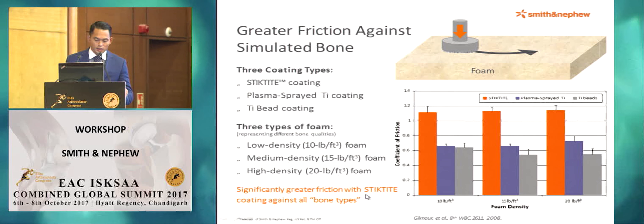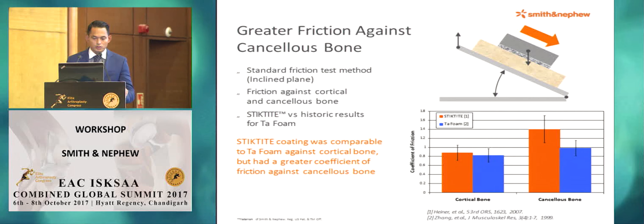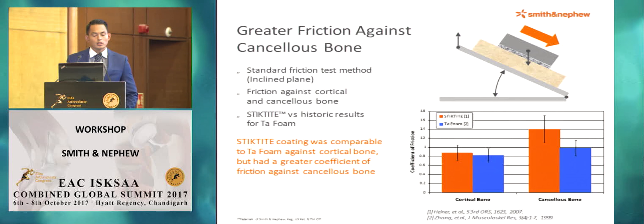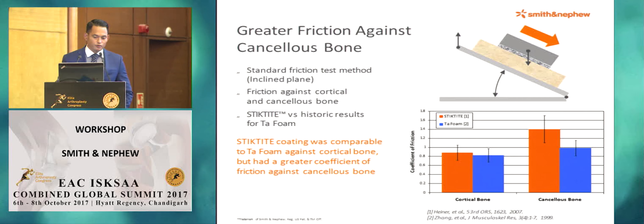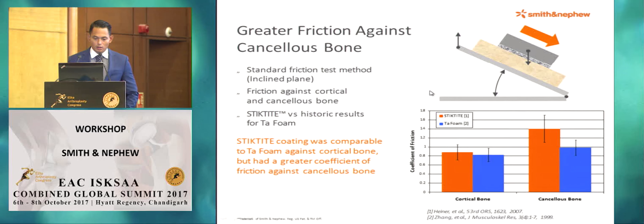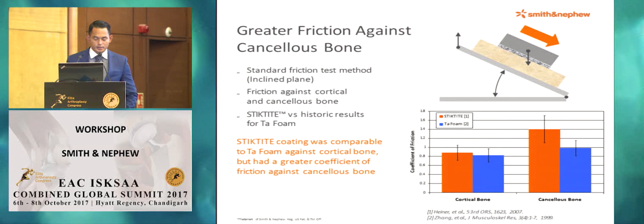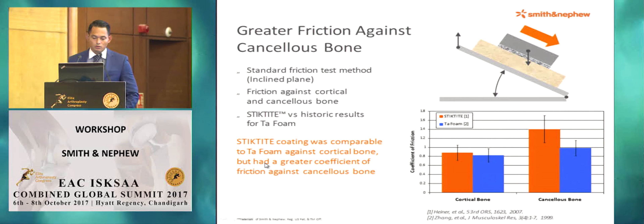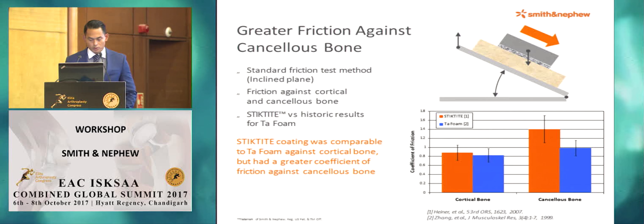Significantly greater friction was seen with Stick-Tie across all bone types. With regards to friction against cancellous bone — which is what we want in total hips, as we're getting down to bleeding cancellous bone — using the standard friction test method along an incline plane, friction was tested against cortical bone as well as cancellous bone, and Stick-Tie was compared to historic results for a tantalum foam. Stick-Tie coating was comparable to tantalum foam against cortical bone, but had a greater coefficient of friction against cancellous bone — very important, as we're primarily going against cancellous bone when putting in our cups.